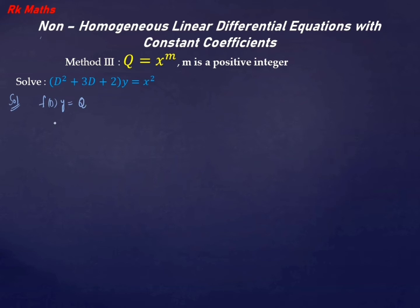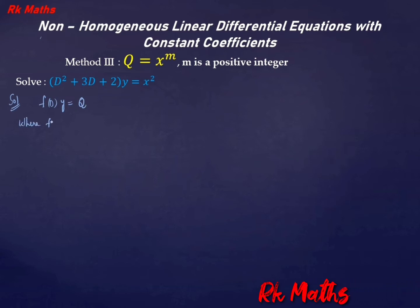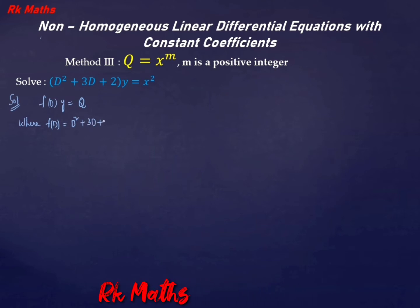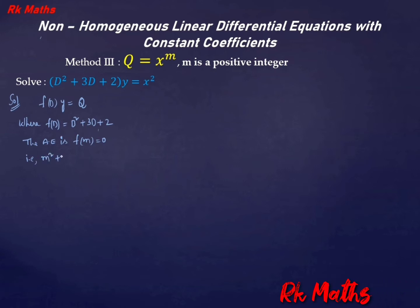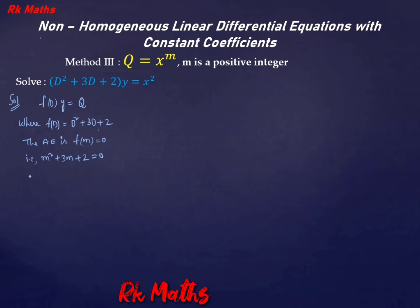Solution. The given equation is in the form f(D)·y = Q, where f(D) = D² + 3D + 2. The auxiliary equation is f(m) = 0. That is, substituting D → m: m² + 3m + 2 = 0.